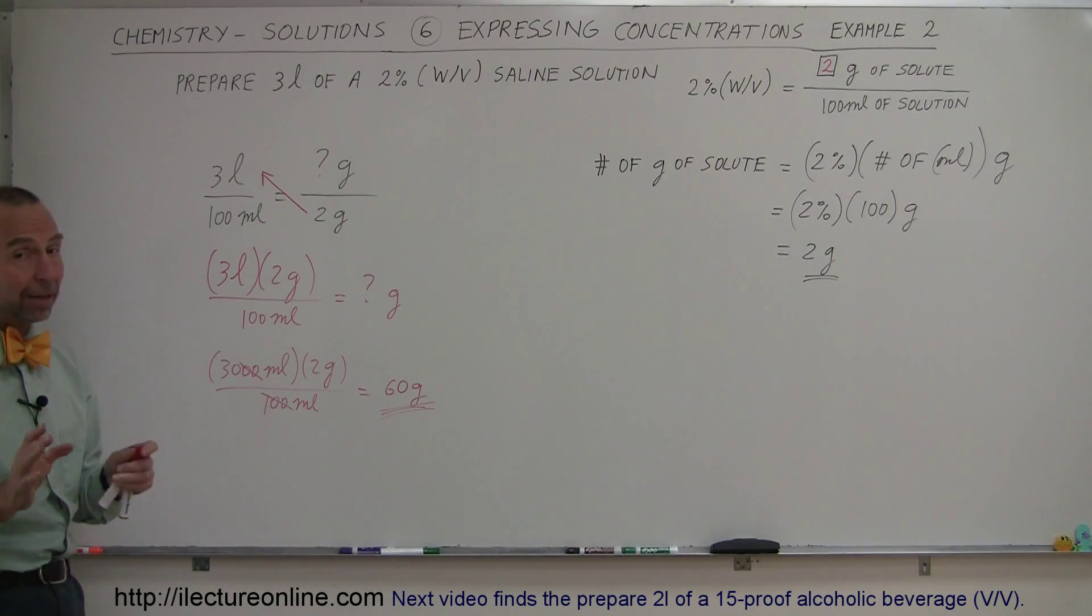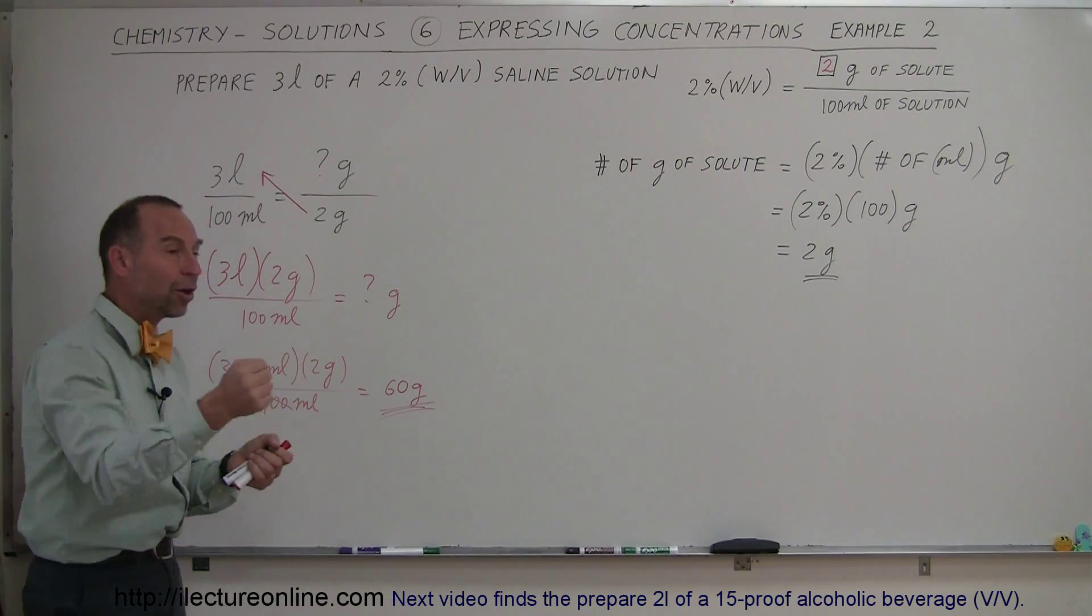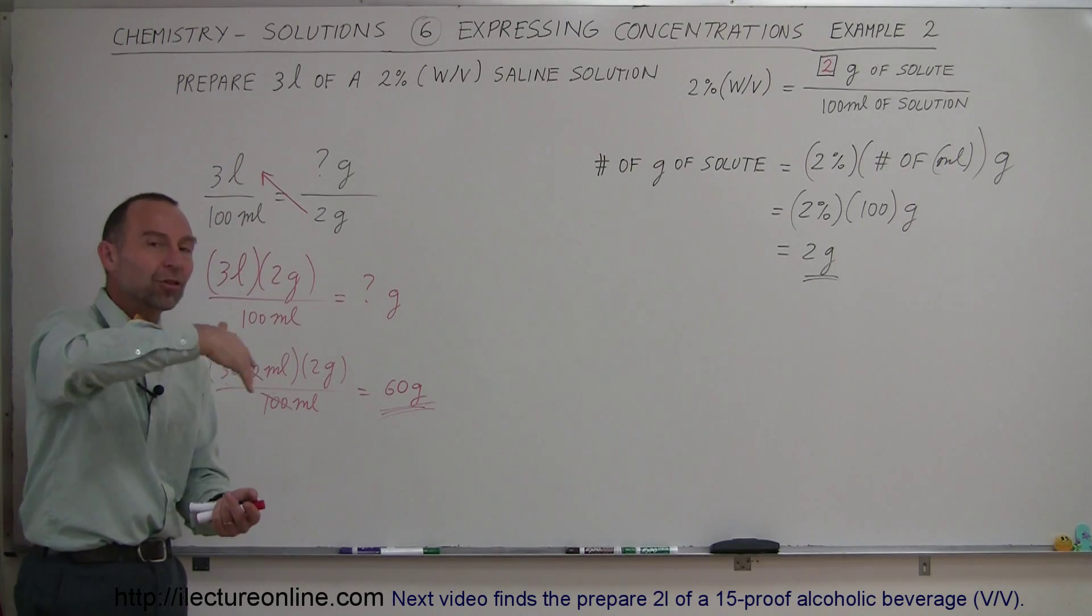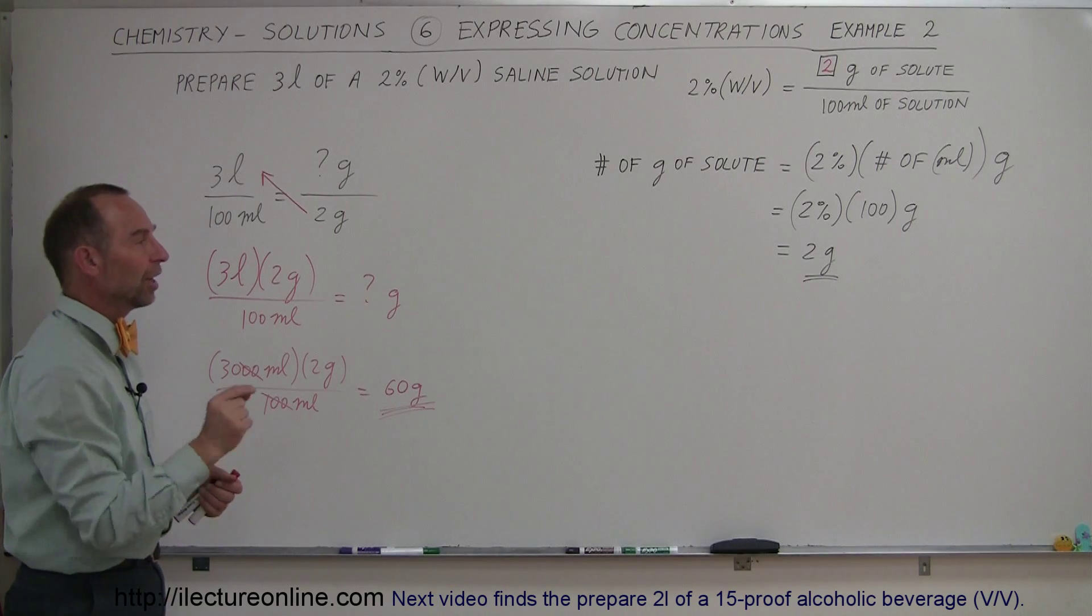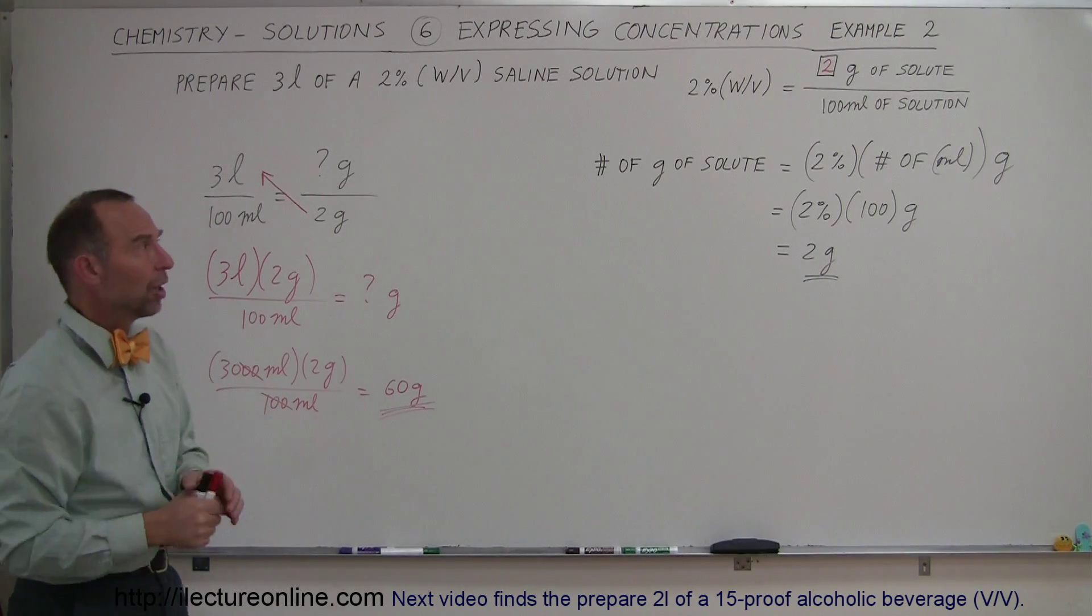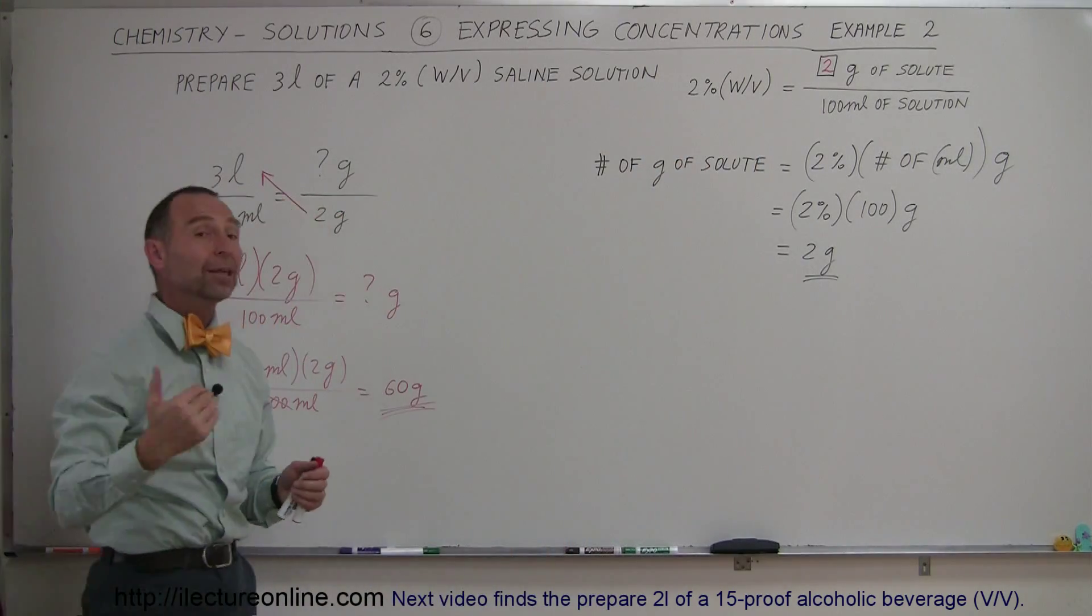Now, again, how do you prepare that? You don't take 3 liters of water and add 60 grams of salt to it. You take 60 grams of salt and you keep adding water to it until the solution, after the salt is dissolved, has reached a volume of 3 liters. That's how you properly prepare it. But that's how you find the concentration when we talk about weight and volume concentration, not weight and weight concentration.